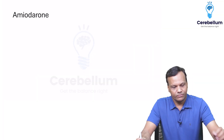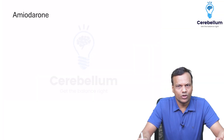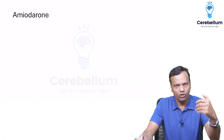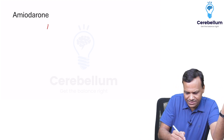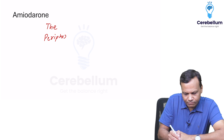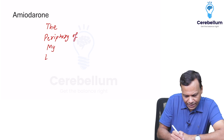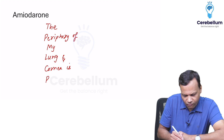Hello everyone. Today's mnemonic is related to the side effects of amiodarone. You can remember the adverse effects of amiodarone as: 'the periphery of my lung and cornea is photosensitive.'